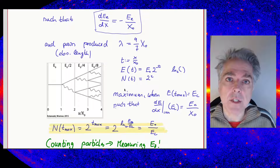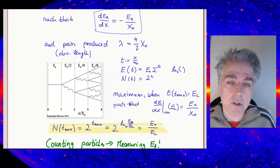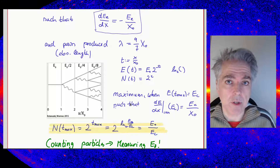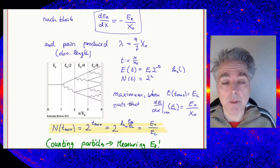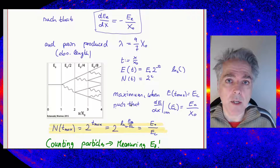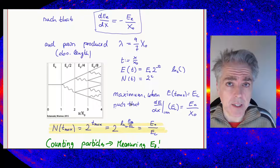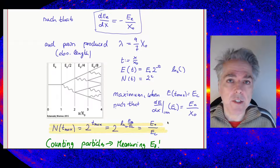The average energy after T radiation lengths is E₀ × 2⁻ᵀ, and the number of particles after T radiation lengths is 2ᵀ on average. The maximum of this process is reached once the average energy hits either the pair production threshold or the critical energy — whichever comes first. The critical energy is usually hit first because it is larger than the pair production threshold in most media.